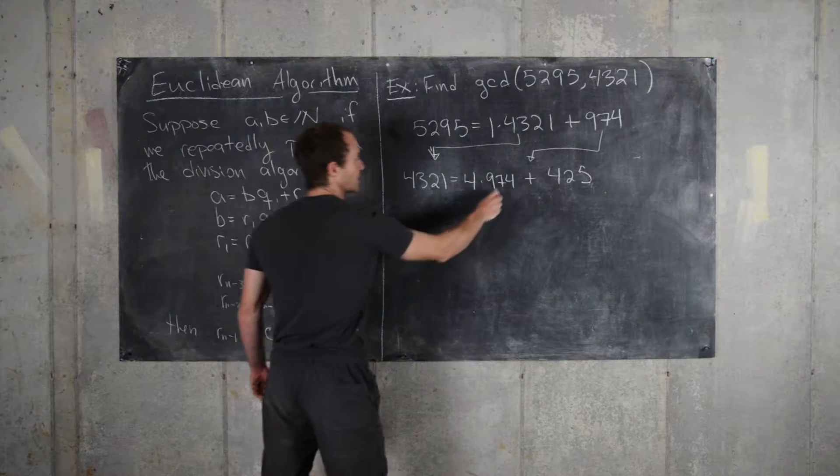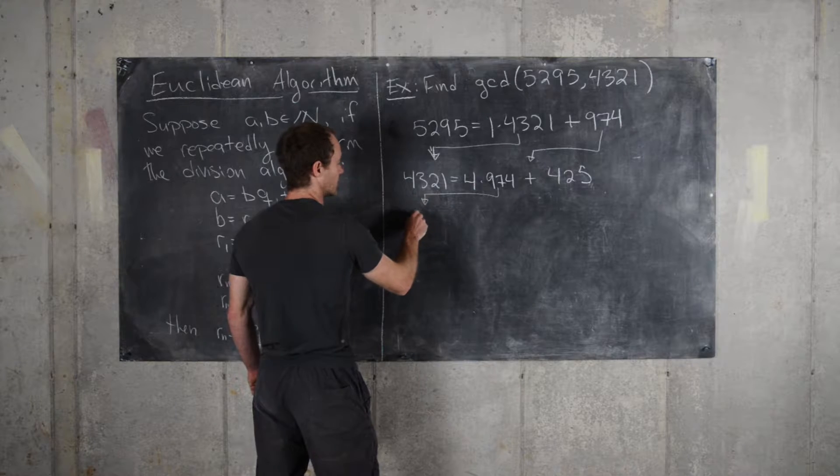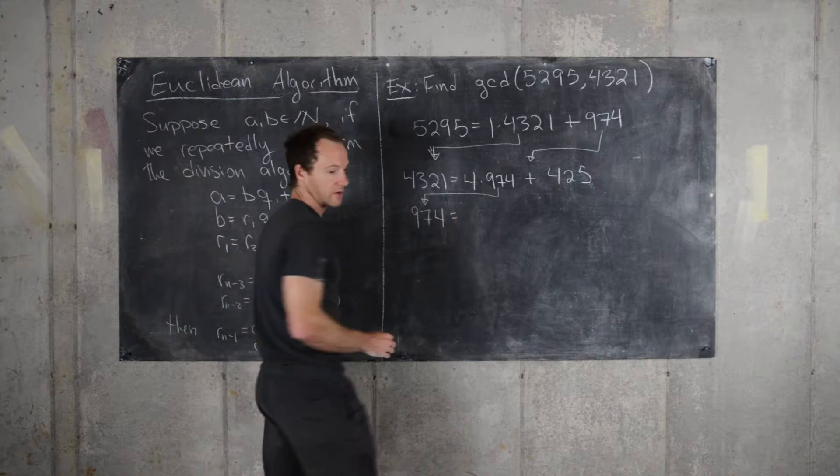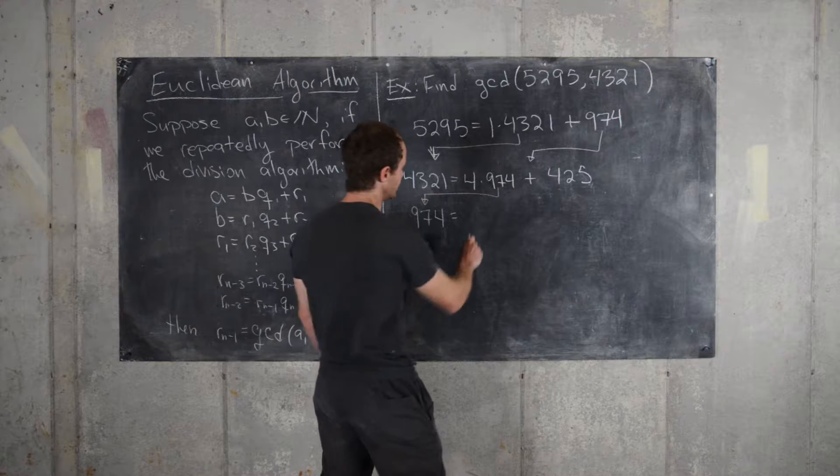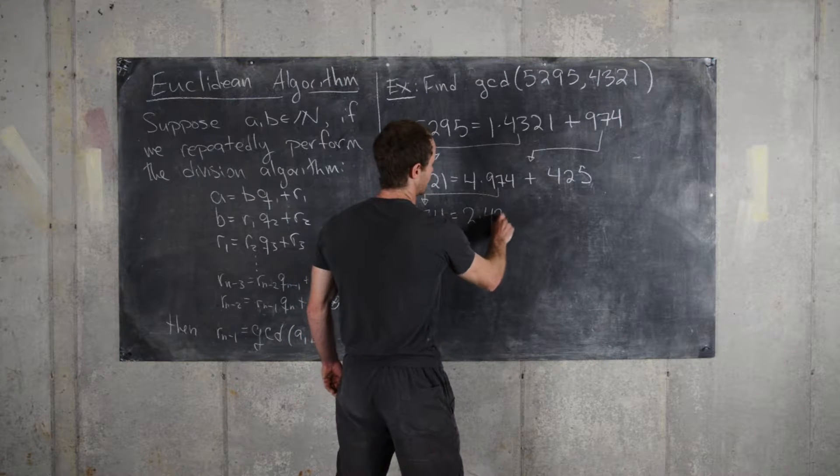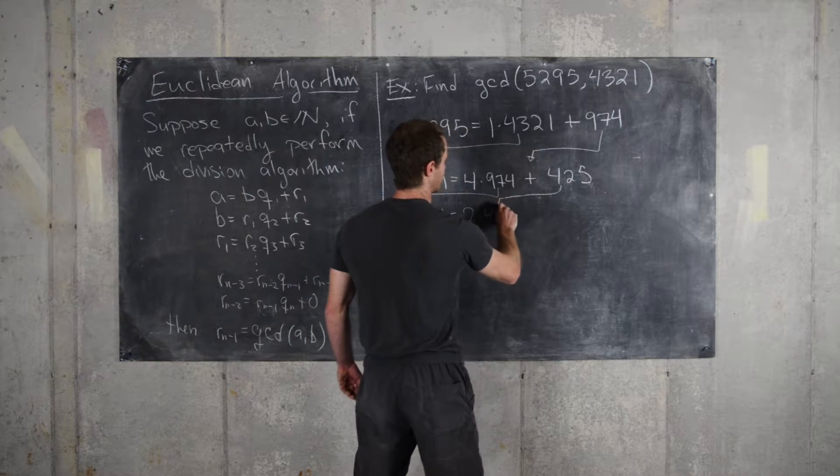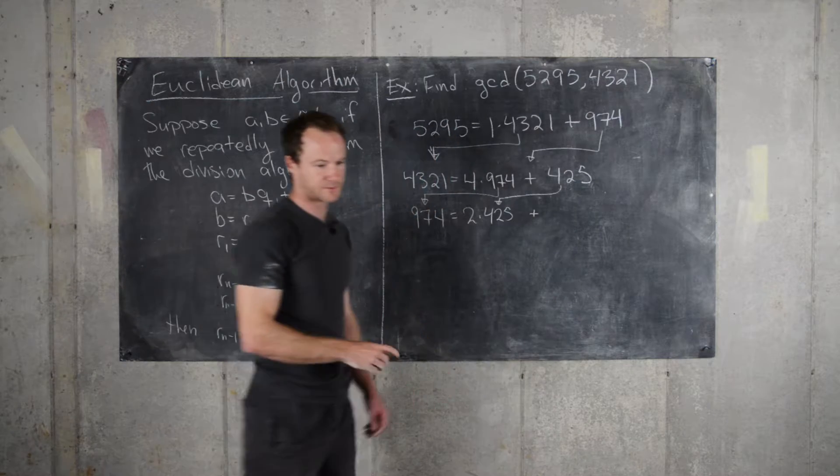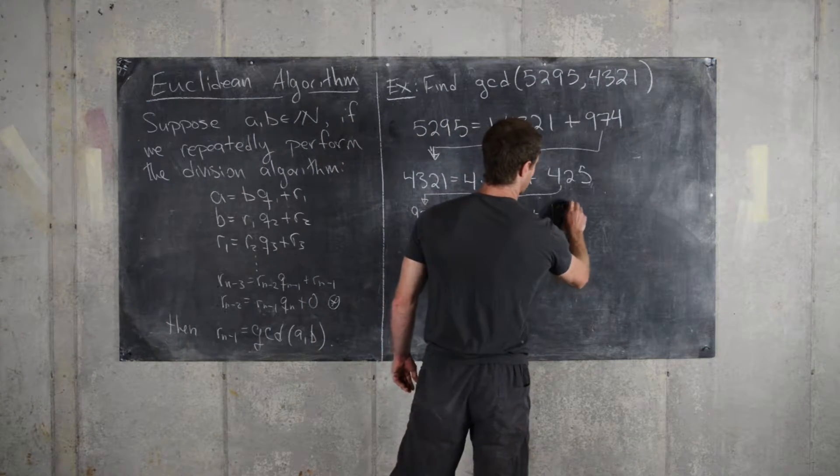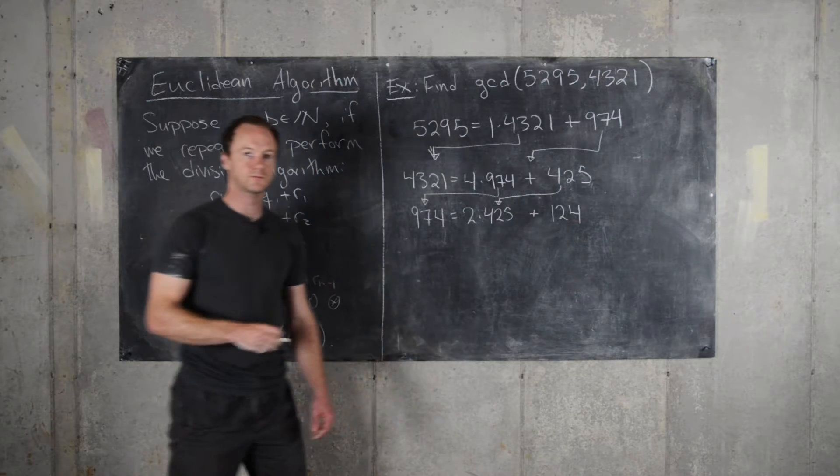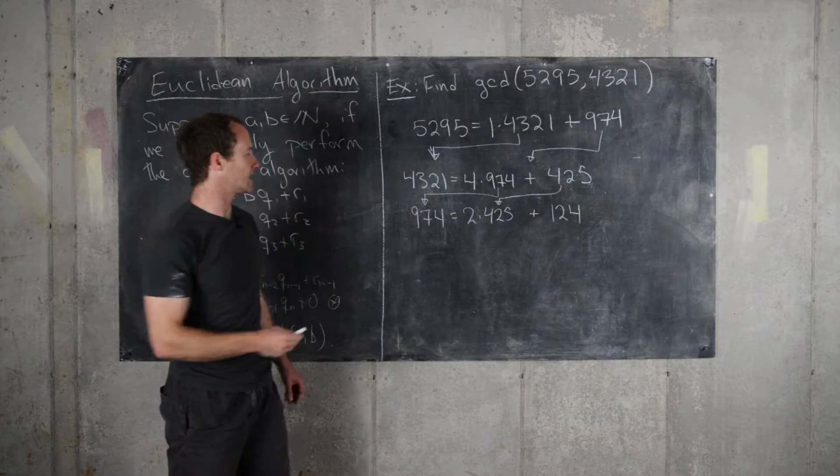So now we can move 974 down, and so that will be 2 times 425. We've moved 425 down plus 124. So now we can keep going.